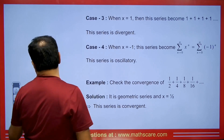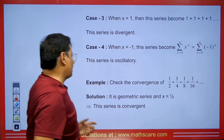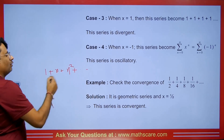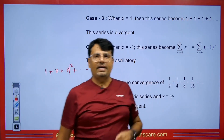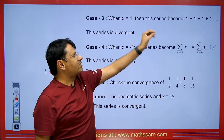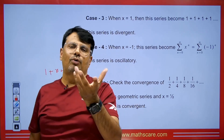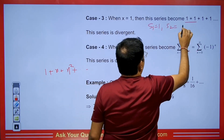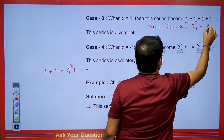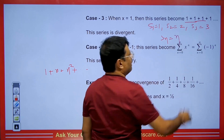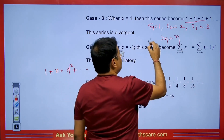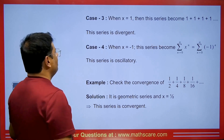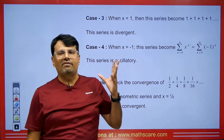But what happens if the value of x becomes 1? If we put x equal to 1 in 1 plus x plus x squared, we get 1 plus 1 plus 1, which is called a constant series. Always remember: a constant series is always divergent. The partial sums give S1 = 1, S2 = 2, S3 = 3, so SN becomes n. When we take the limit as n tends to infinity, the value is infinite — hence it is divergent. So if the value of x is 1, the series is divergent.